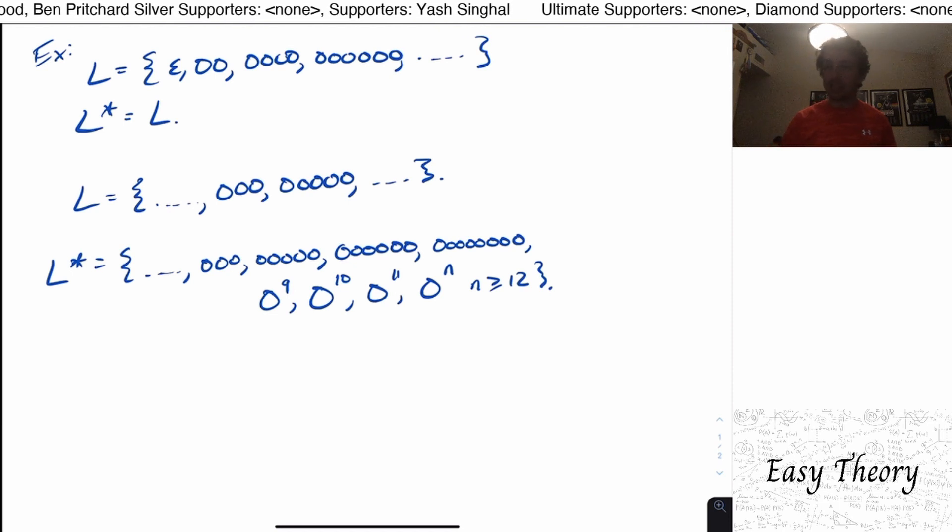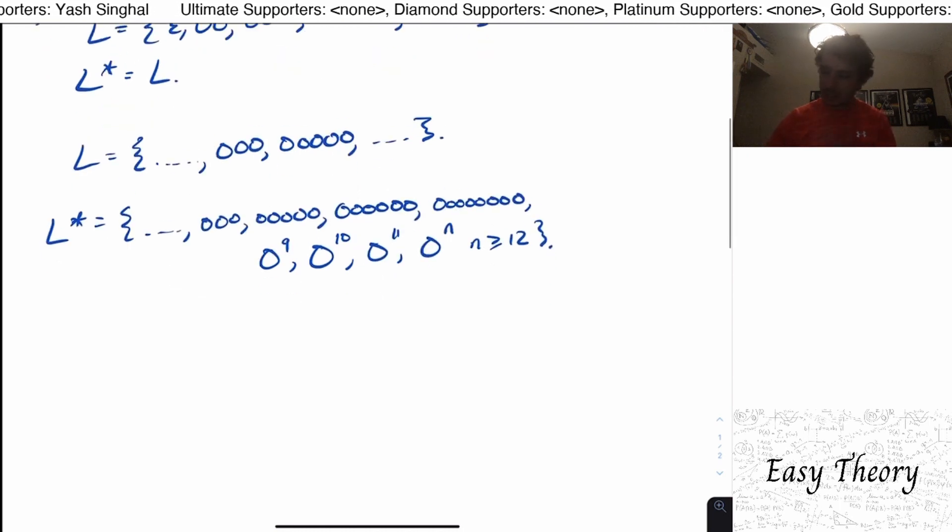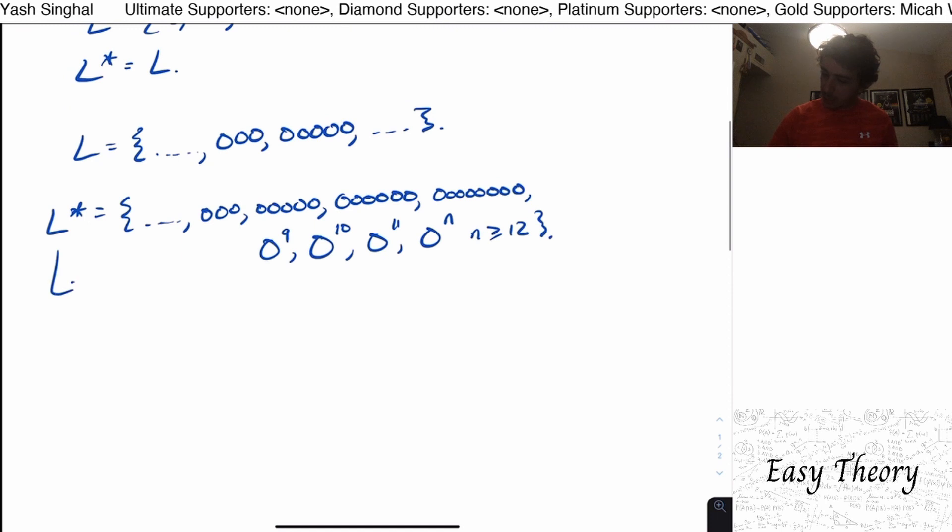So that means that the strings that we get are every single string minus all the ones of length at most eight, and that's only a finite number of strings missed.